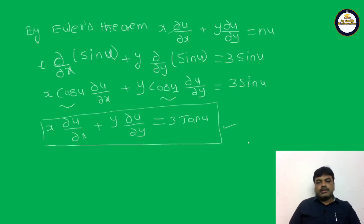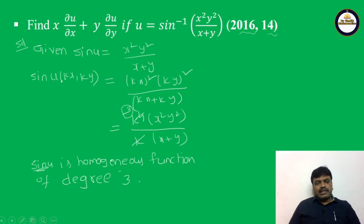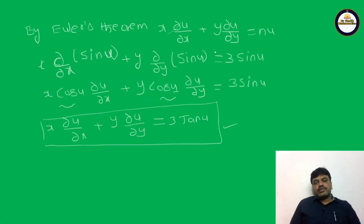This is the result: x·∂u/∂x + y·∂u/∂y = 3 tan u. To summarize: given u = sin inverse of x²y²/(x+y), we write sin u = x²y²/(x+y), which is a homogeneous function of degree 3. Applying Euler's theorem and differentiating sin u gives cos u·∂u/∂x and cos u·∂u/∂y, leading to the final answer of 3 tan u.